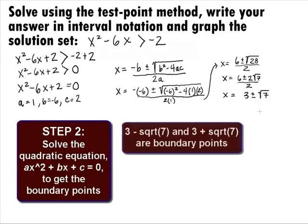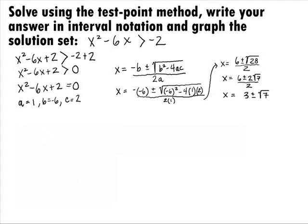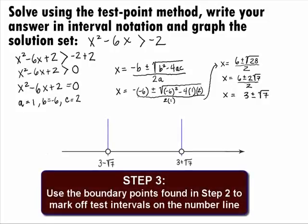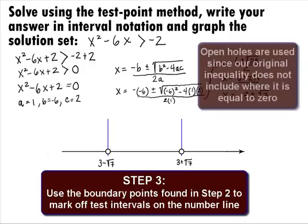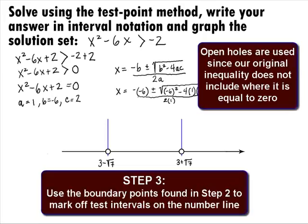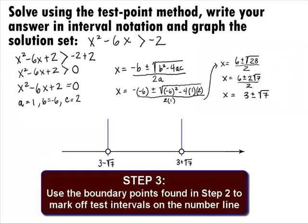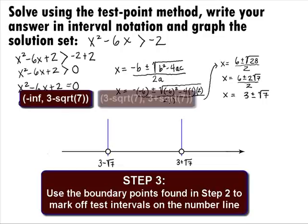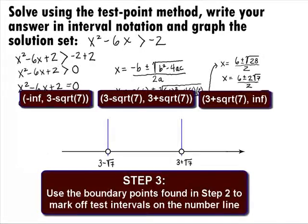So it looks like we have two boundary points: 3 plus the square root of 7, and 3 minus the square root of 7. In Step 3, we want to use the boundary points from Step 2 to mark off test intervals on the number line. We have marked off our boundary points of 3 minus the square root of 7 and 3 plus the square root of 7, using open holes because our original inequality did not include where it is equal to 0. Our boundary points mark off three sections: negative infinity to 3 minus square root of 7; 3 minus square root of 7 to 3 plus square root of 7; and 3 plus square root of 7 to infinity.